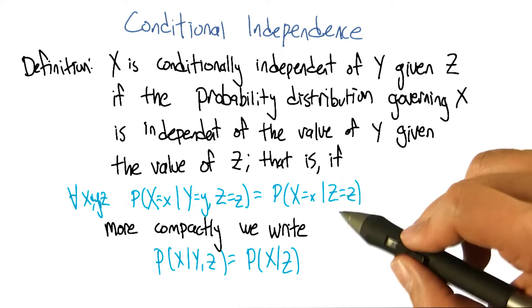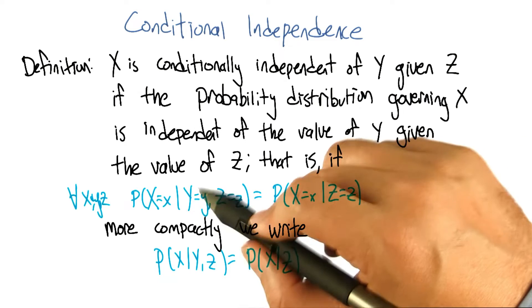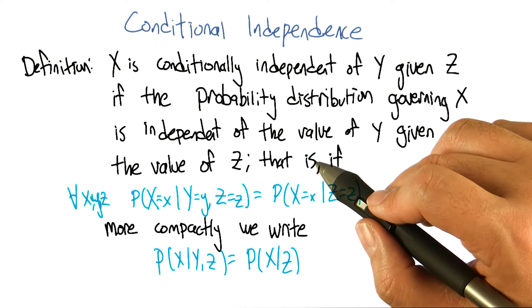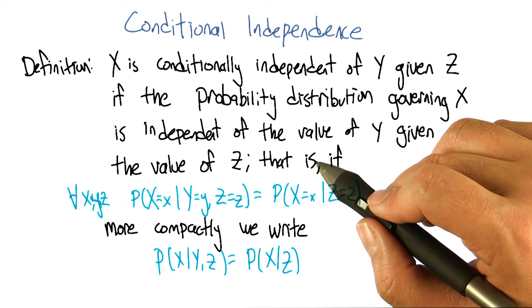So you see we dropped Y from the right hand side of the probability expression. Okay, so it's fewer things that we have to worry about if it's the case that we really didn't need it in the first place. Fair enough. So that's pretty similar to normal independence. Okay, so what's normal independence?